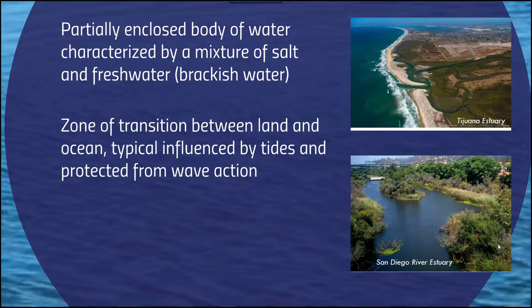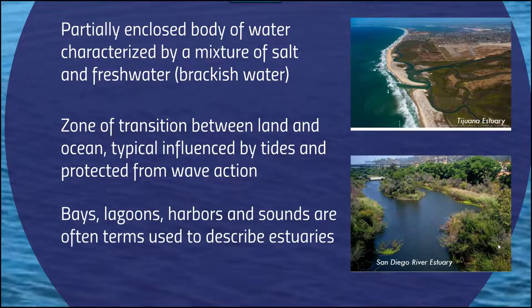Estuaries are considered a zone of transition between the land and the ocean. They're typically influenced by tides and protected from wave action, which is more active in the marine wetland region. Estuaries can correspond to bays, lagoons, harbors, and sounds — and these terms are often used interchangeably to describe estuaries.